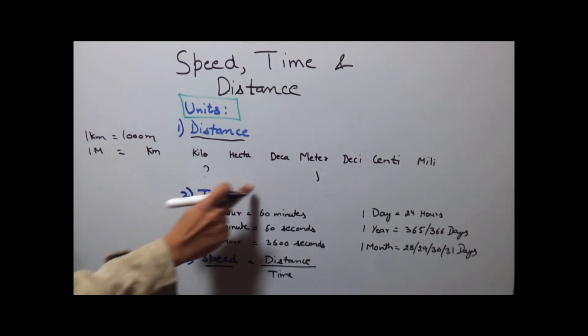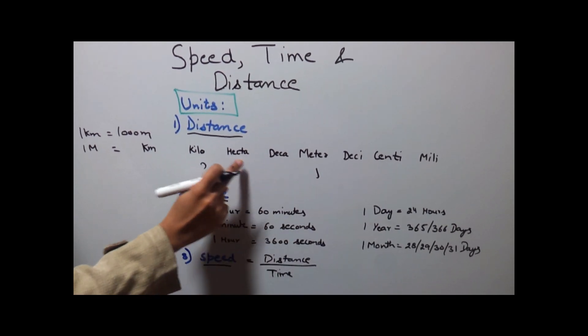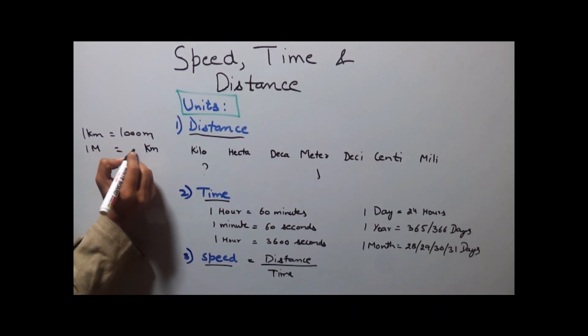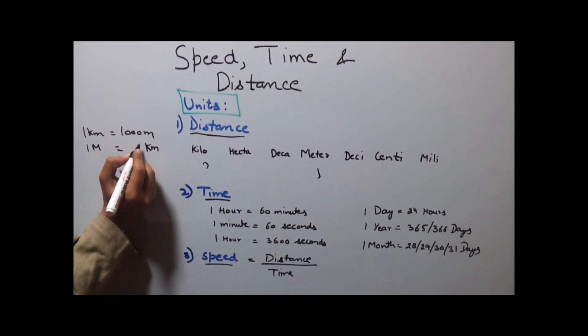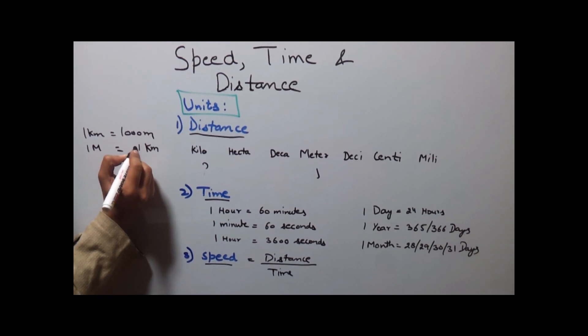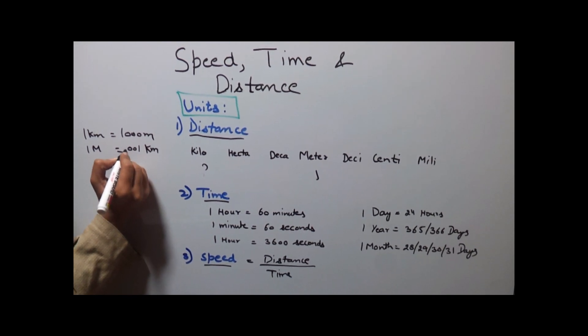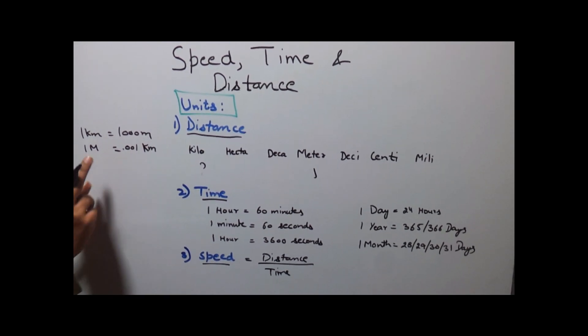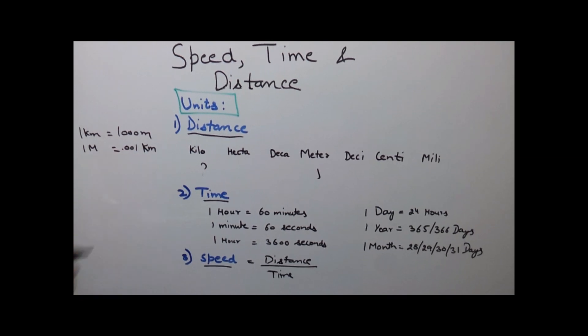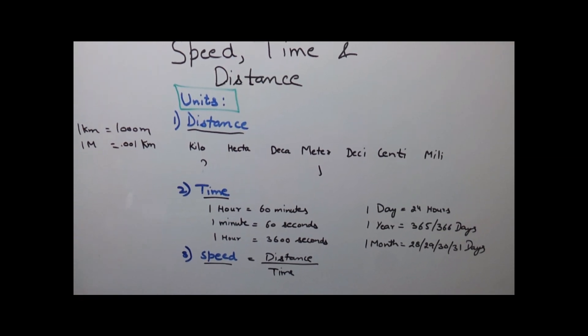So 1 meter would be equal to shifting the decimal point three places: 1, 2, 3, giving you 0.001 kilometer.